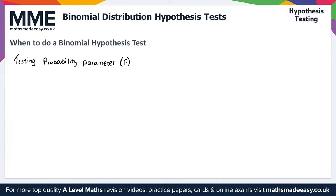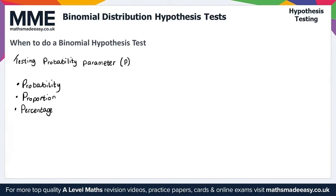For this video we're only concerned about the binomial distribution hypothesis test. When testing the probability parameter, there will be certain words that give us a clue to use a binomial hypothesis test — words such as probability, proportion, and percentage. Make sure you also use the situation and context of the question; if we're modelling the situation as a binomial distribution, then you also want to do a binomial hypothesis test.